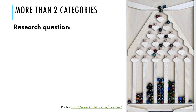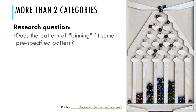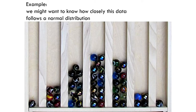To walk through how we do a chi-square goodness-of-fit test — now there are two different kinds of chi-squares, and we're going to do the slightly simpler one, the goodness-of-fit test. To walk through how we do it and what kind of situations we would bother to do this for, let's consider a research question. The research question we always have is whether the pattern of binning, the pattern of frequencies — the number of cases in each category — whether that fits some pre-specified pattern or not.